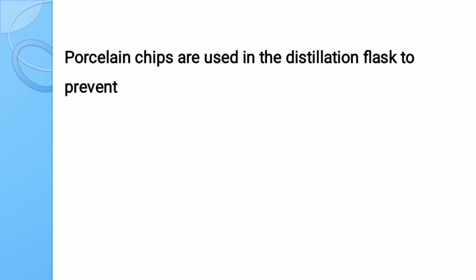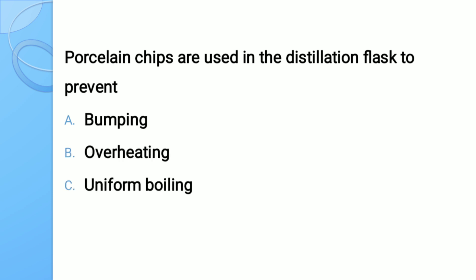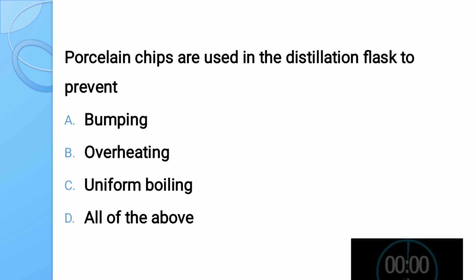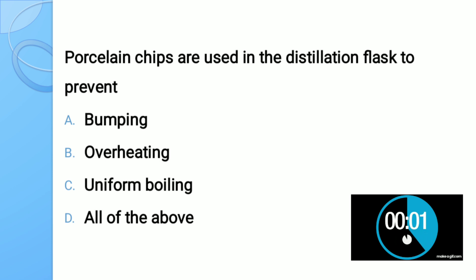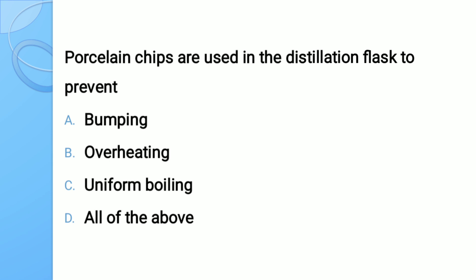Question number four: Porcelain chips are added in a conical flask to prevent — options: A) bumping, B) overheating, C) uniform boiling, D) all of the above. The correct answer is bumping. Porcelain chips are added to prevent bumping.